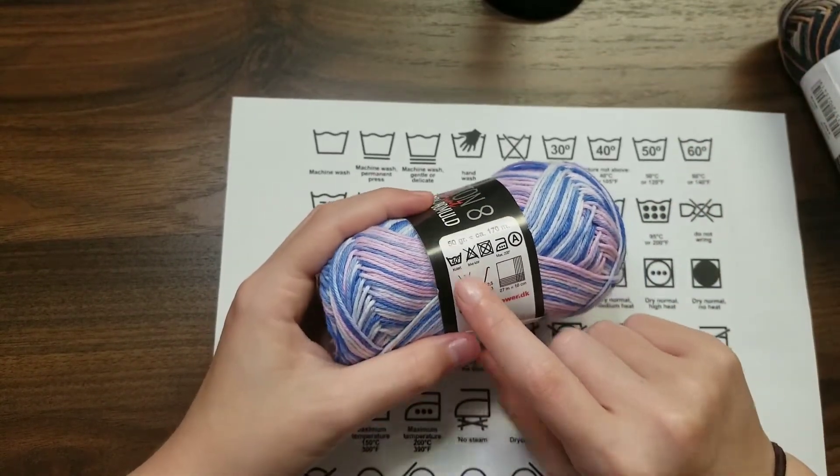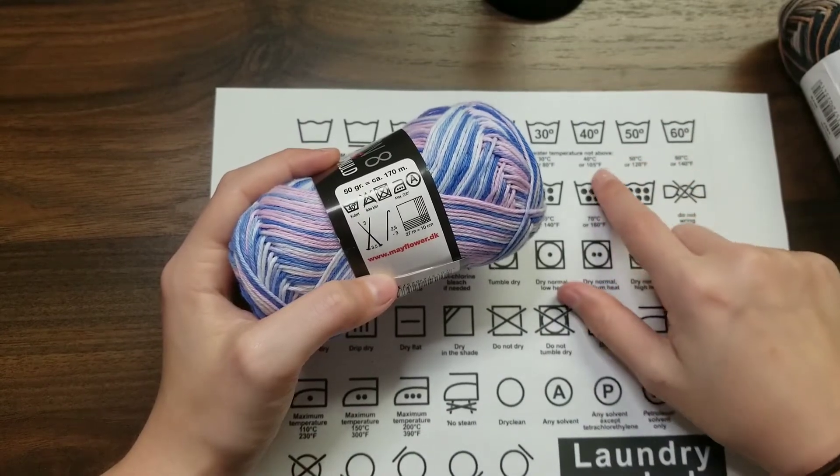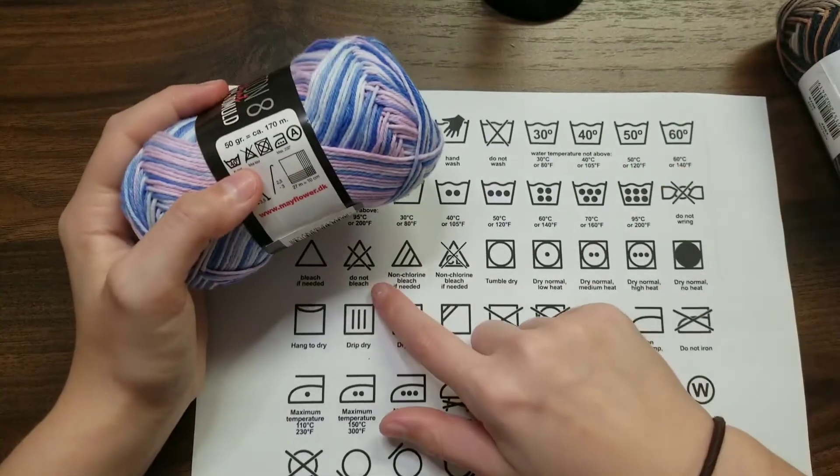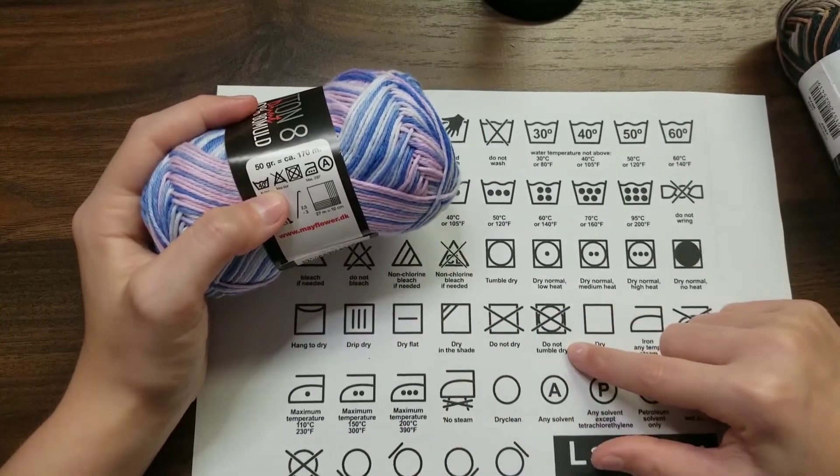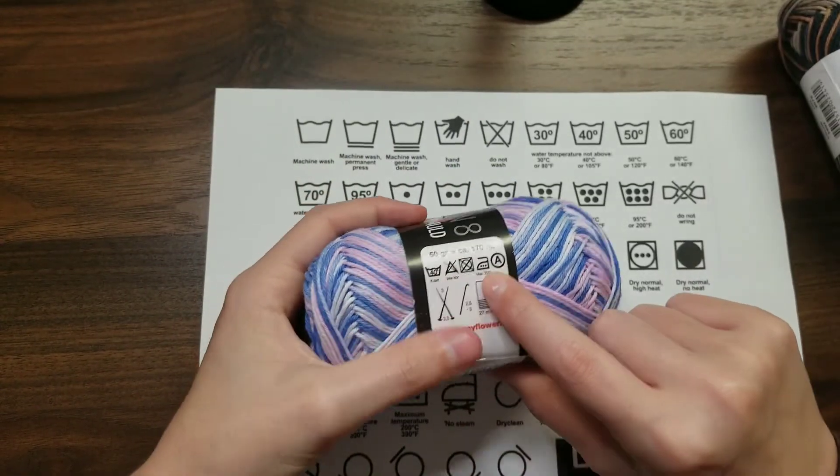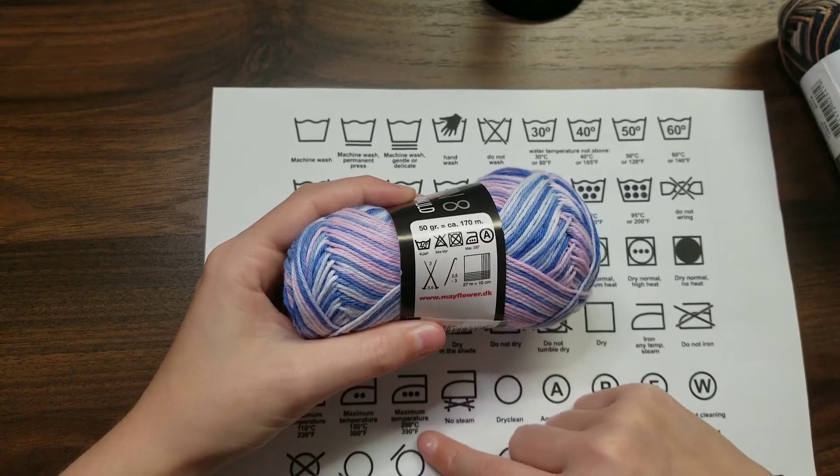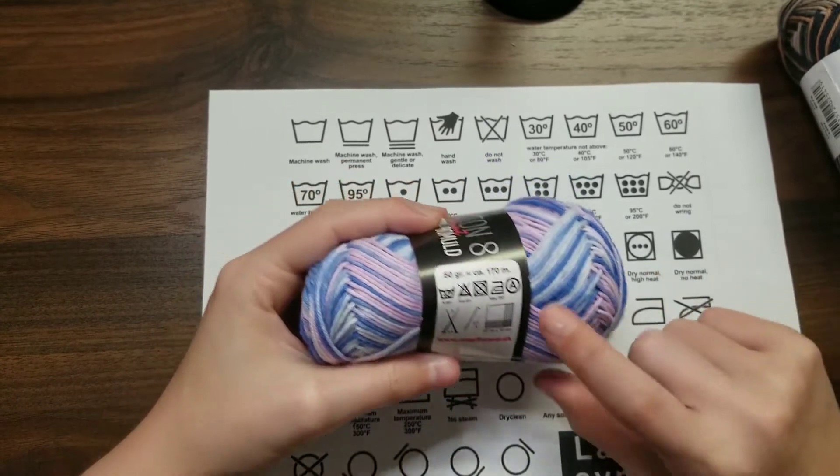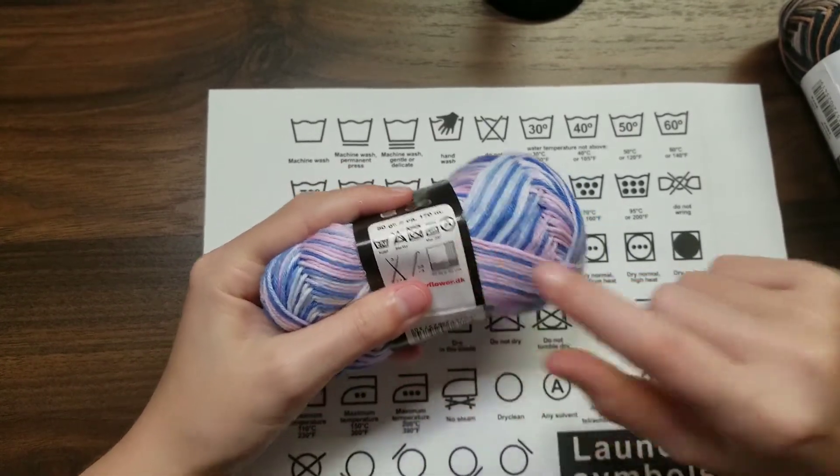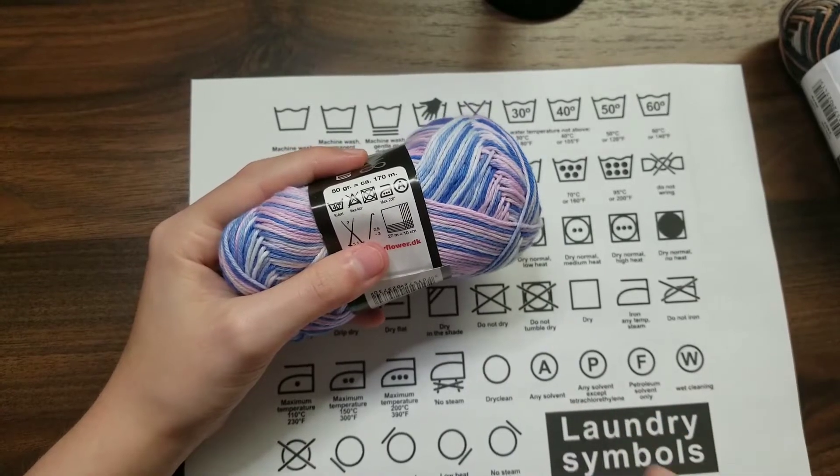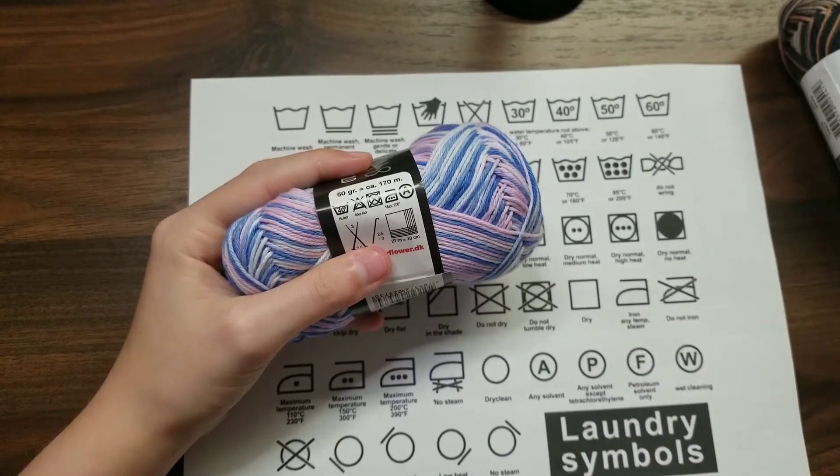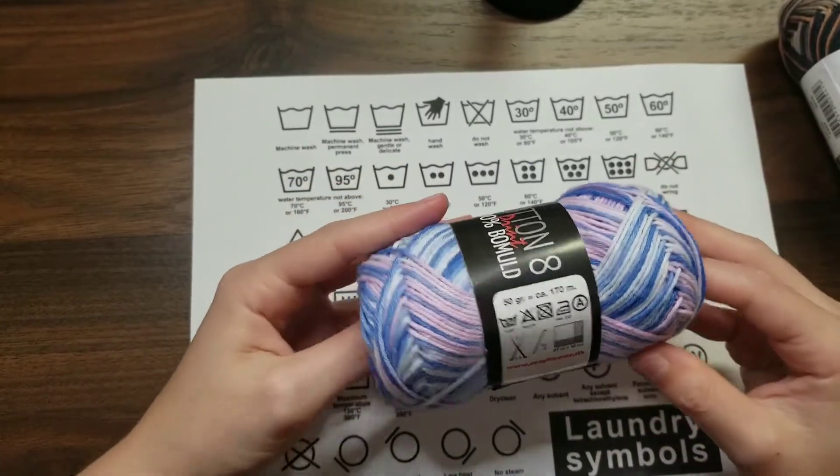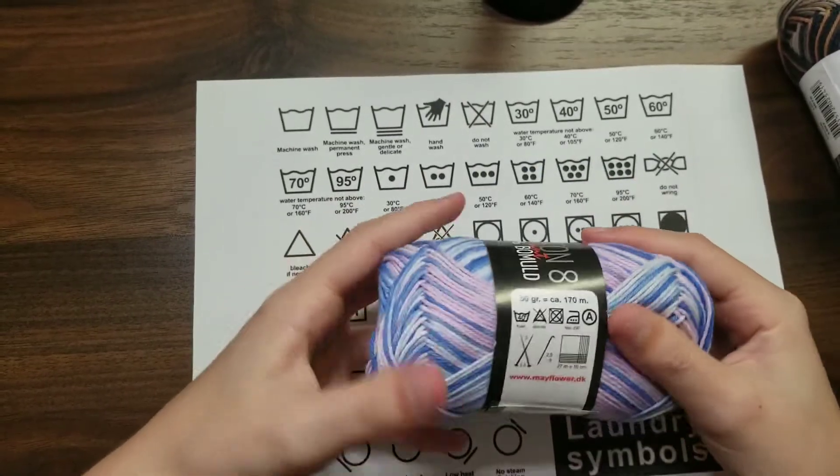And then it has this one right here, which is the water temperature not above 40 degrees Celsius or 105 degrees Fahrenheit. And then here we have the Do Not Bleach symbol. Again, with the Do Not Tumble Dry. And then this one right here is a bit different. And now, it says the maximum temperature for ironing is 200 degrees Celsius or 390 degrees Fahrenheit. And then for this one right here, it just means any solvent. So I'm guessing that is based on what type of soap, possibly. But any solvent will do for this yarn. And that is all that there is on this.